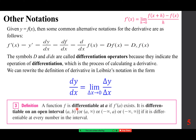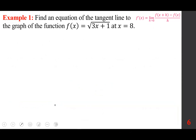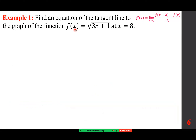A function f is differentiable at a if f'(a) exists. It is differentiable on an open interval (a, b), (a, ∞), (−∞, a), or (−∞, +∞) if it is differentiable at every number in that interval. What we are going to do is use this definition to find f'(x). We can find an equation of a tangent line — we've already done that. But the difference in this section is that instead of calculating f'(a) directly, we calculate f'(x) first and then plug in.